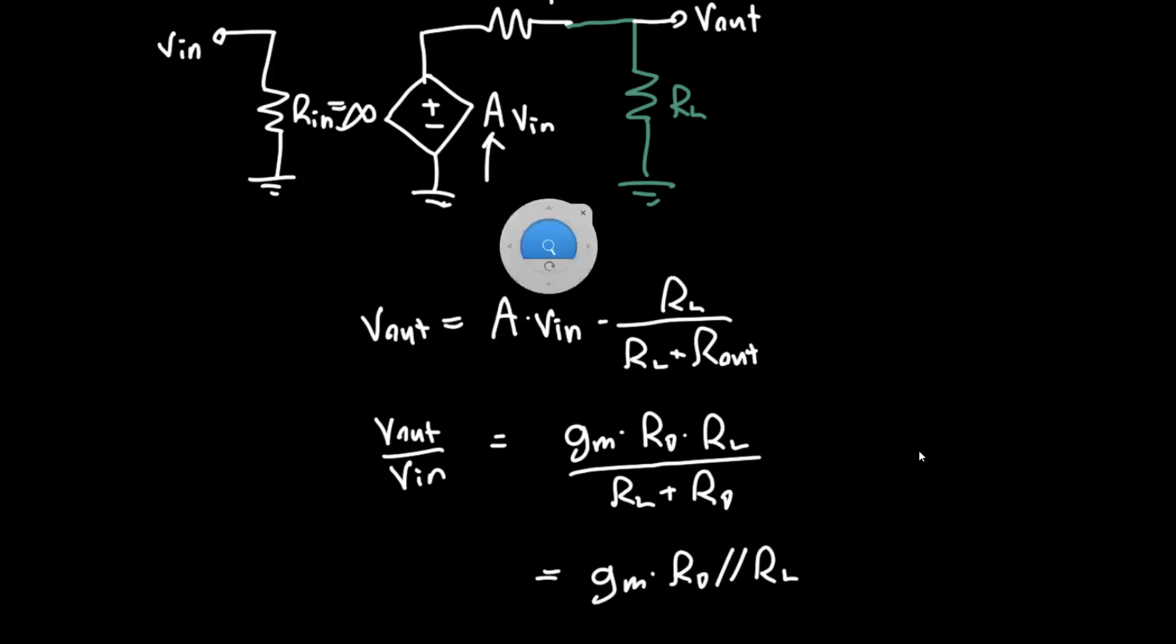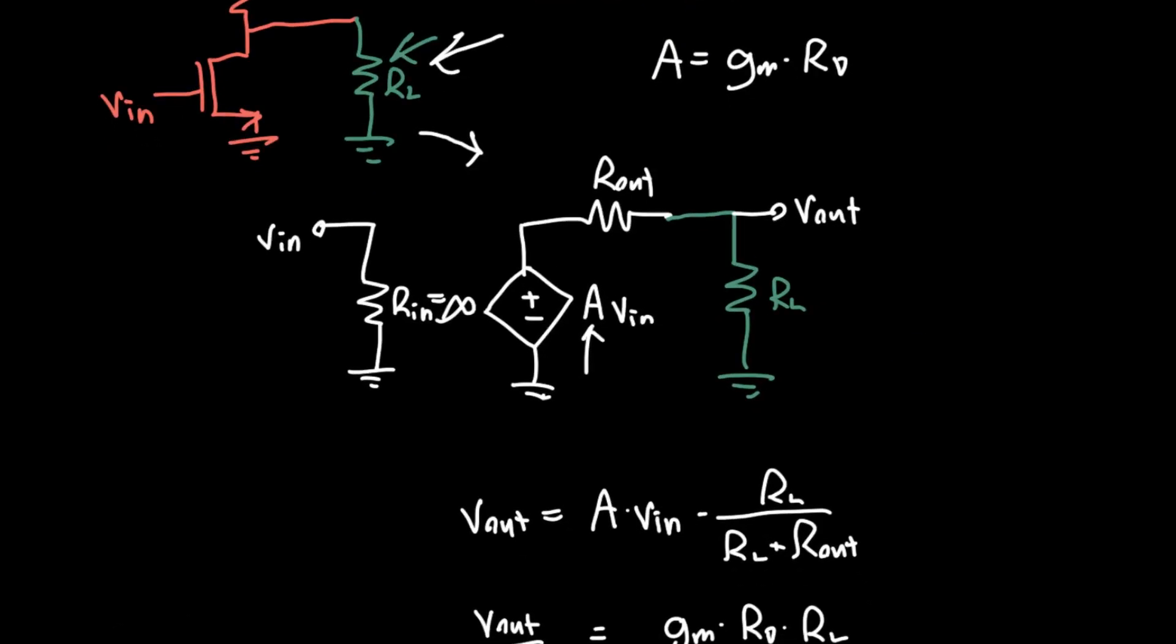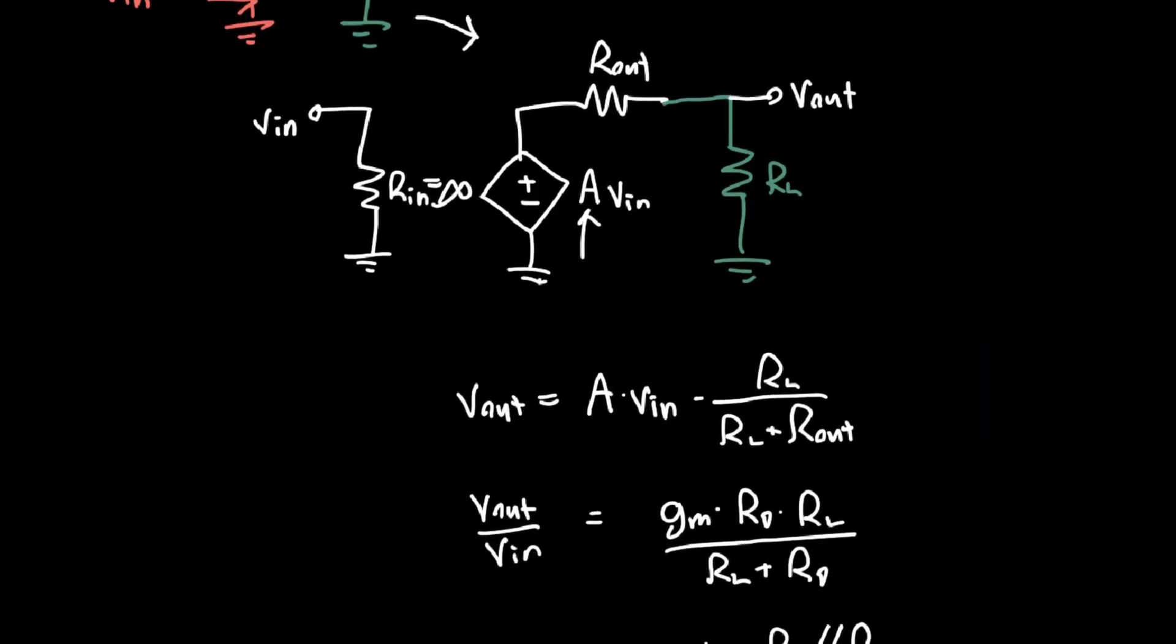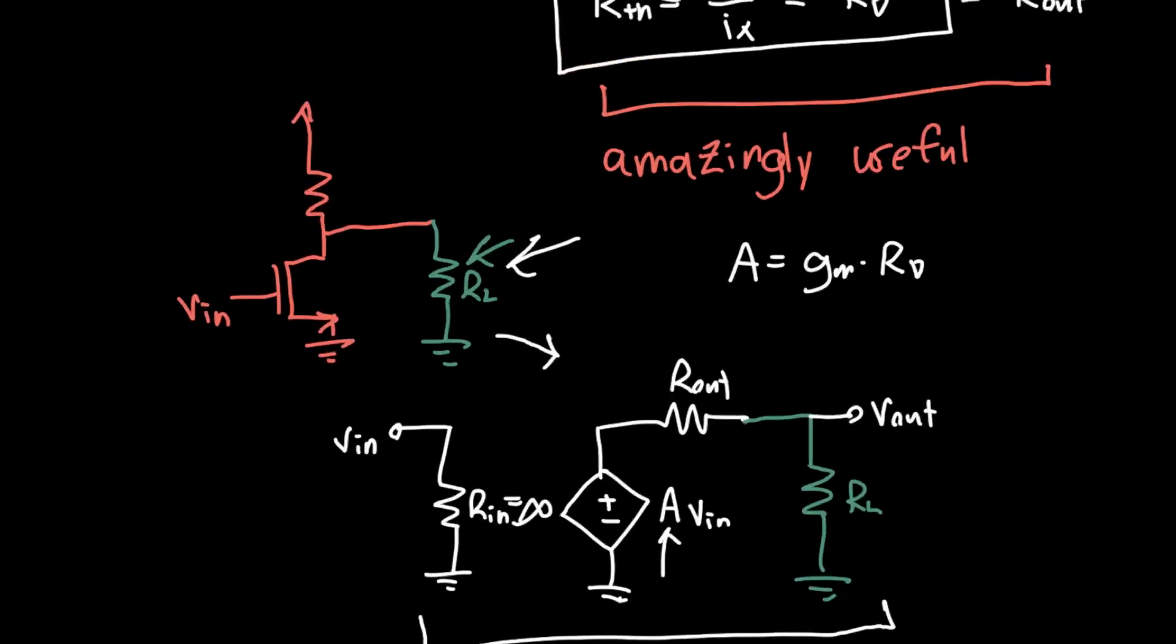This can be rewritten if you prefer as g_m times RD in parallel with R_L. This Thevenin resistance, this output resistance, is great because now when we add components to the output of an amplifier, rather than redoing all of the analysis, we can just place the new element in our two-port model and calculate the output voltage from there. You might say, well Jordan, obviously I can just tell that this R_L is going to be in parallel with this RD here, and fair enough - that's completely true for this somewhat trivial example.